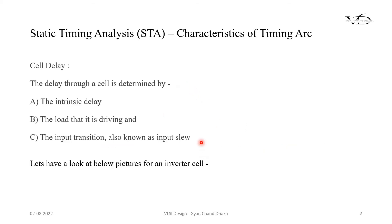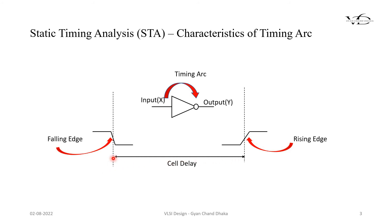As we saw in the previous slide, the delay through this cell is determined by three factors: the intrinsic delay, the load the cell is driving, and the input transition, also known as input slew. The STA tool by default takes 50% of the transition. The input is transitioning from high to low and hence the output transitions from low to high because this is an inverter cell. The 50% of the input to the 50% of the output is nothing but the cell delay.